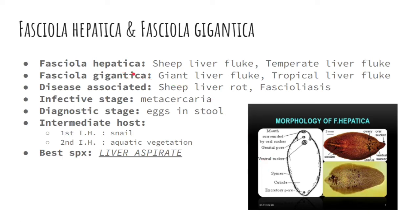Let's now move on to Fasciola hepatica and Fasciola gigantica. Fasciola hepatica is also known as the sheep liver fluke or the temperate liver fluke. 'Hepa' refers to the liver — so this parasite is found in the liver. Fasciola gigantica is also known as the giant liver fluke or the tropical liver fluke. Please take note of their common names. The disease associated with Fasciola is sheep liver rot, otherwise known as fascioliasis. The infective stage is metacercaria, and the diagnostic stage is eggs in stool via direct fecal smear.